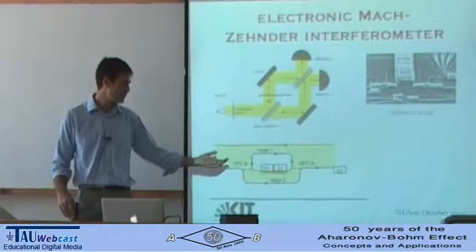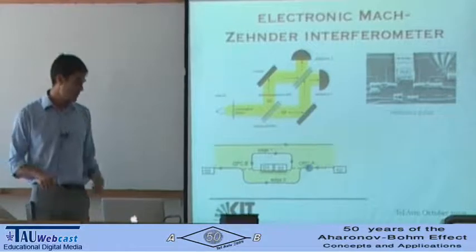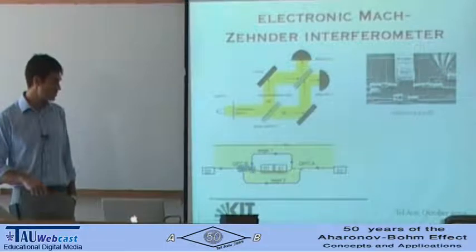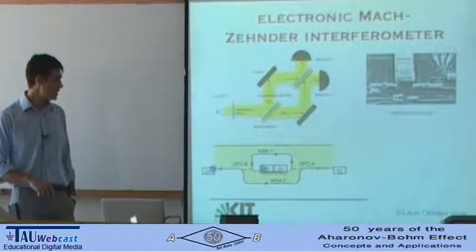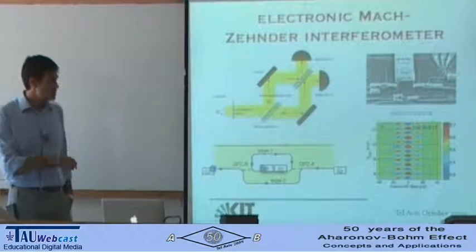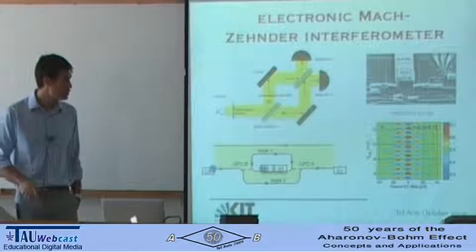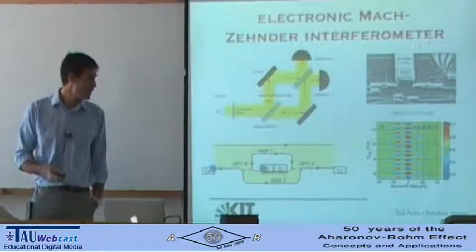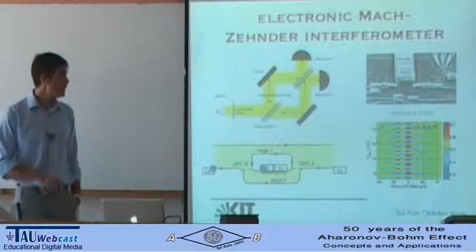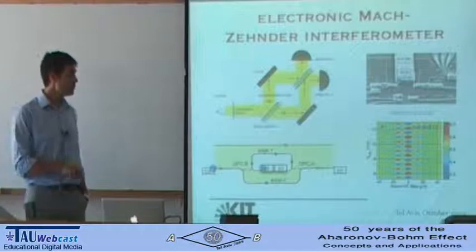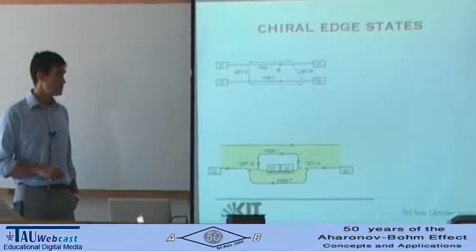You can engineer the geometry of the system to create more than one edge state and design the system so that there is tunneling between edge states. Essentially, you create a quantum point contact at specific points, so edge states can go in both directions. You can see that this is exactly a Mach-Zehnder interferometer. An electron injected at source S2 goes, because of tunneling, through the two paths and can go either to D2 or to D1, which grounds the electron. This system has been realized experimentally, showing Aharonov-Bohm oscillations of the current at one of the drains as a function of the enclosed magnetic flux.